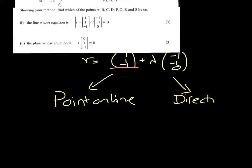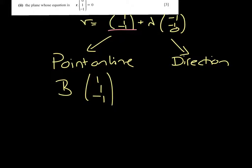so we say point on the line and direction. I think they're looking for us to distinguish between the two, and B is the point (1, 1, -1).